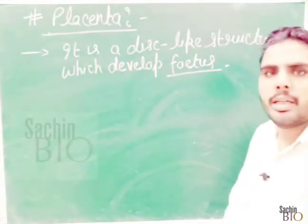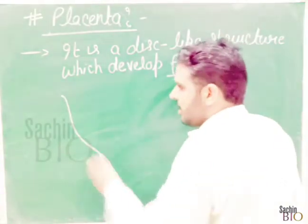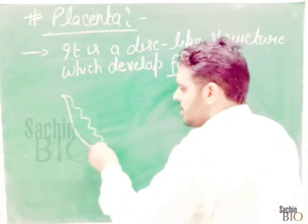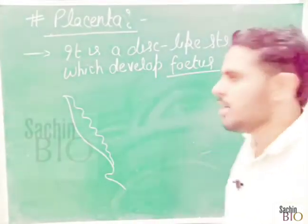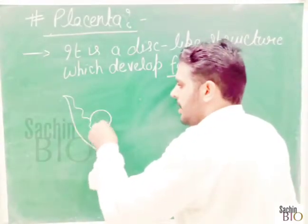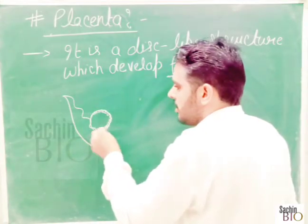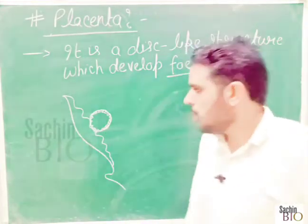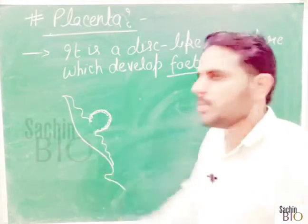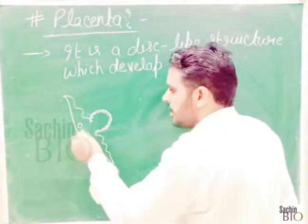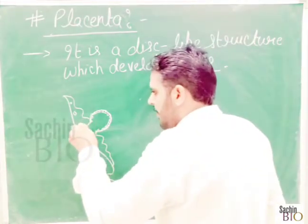The structure of placenta is made by the female reproductive system. This wall is known as the endometrium wall. As you know, as a blastocyst implants here, this outer layer is the trophoblast. The trophoblast meets the endometrium, forming finger-like appendages.